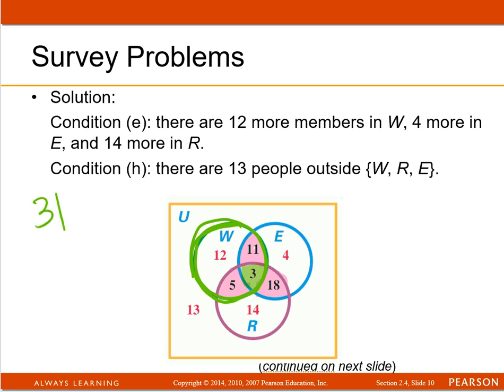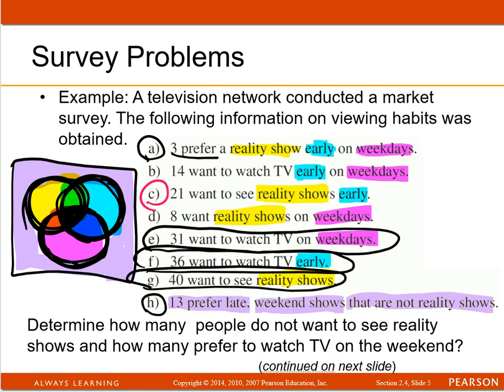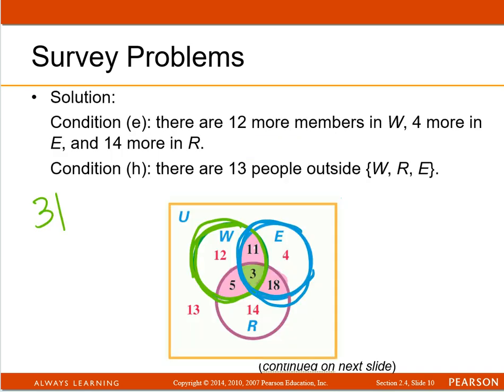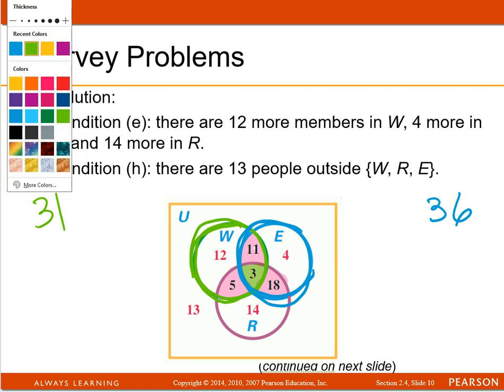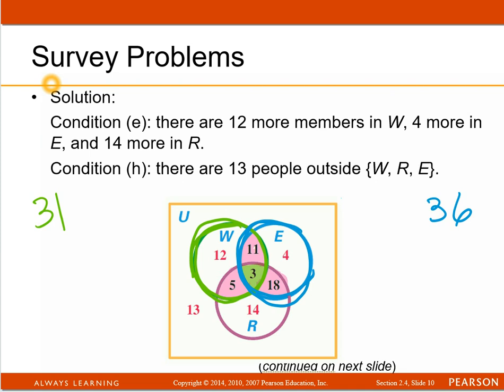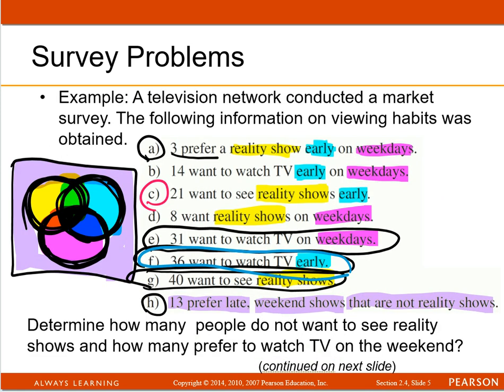And then for the blue circle, this blue circle here, okay that is early. When I go back, where was early? Early was this blue. Okay, there's supposed to be a total of 36 there, so 36 for the blue.